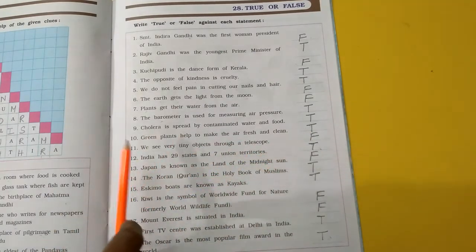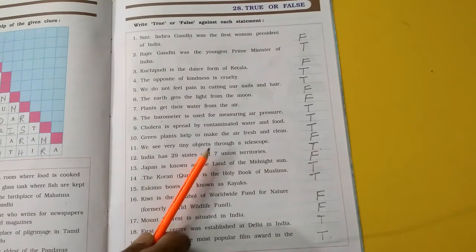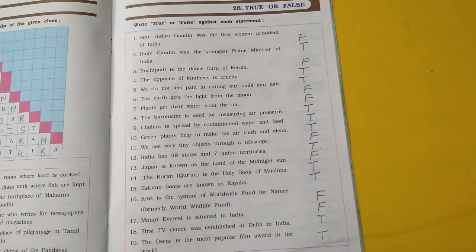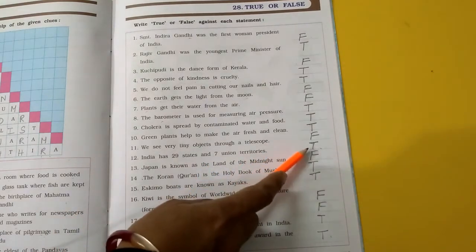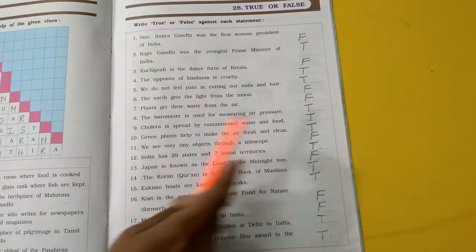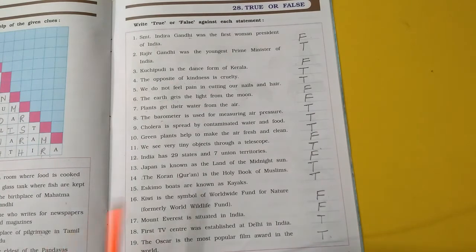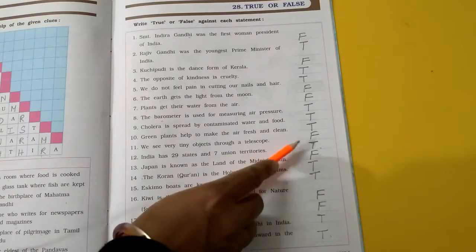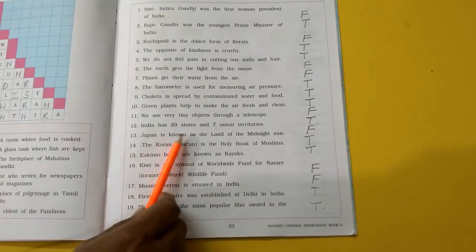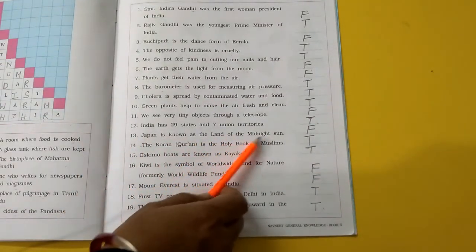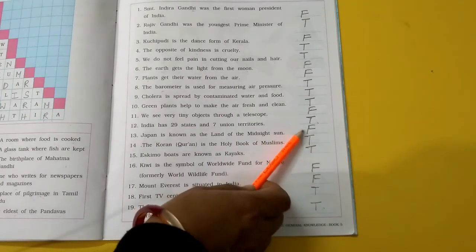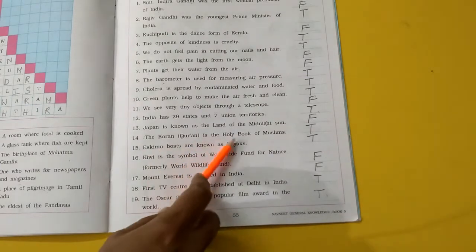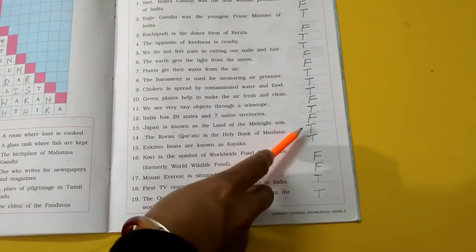We see very tiny objects through a telescope. Hum telescope se bahut hi chhote chhote objects dekh sakte hain. False. Hum microscope se dekhte hain. India has 29 states and 7 union territories. True. Japan is known as the land of the midnight sun. False. The Quran is the holy book of Muslims. True.